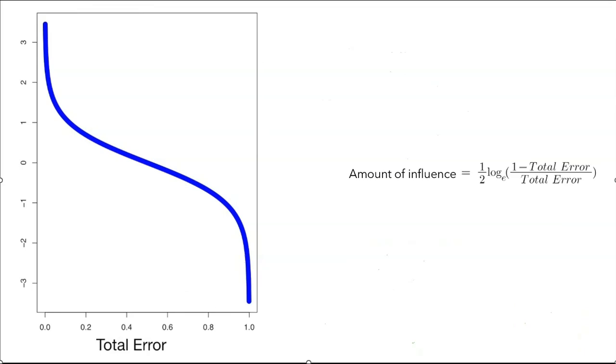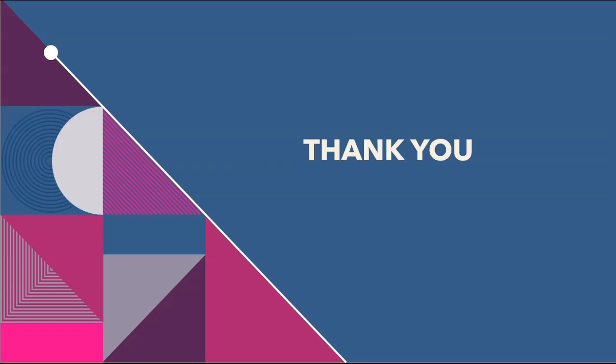This is the equation by which the amount of influence — also called the weight of each weak learner — is calculated. Thank you for watching.